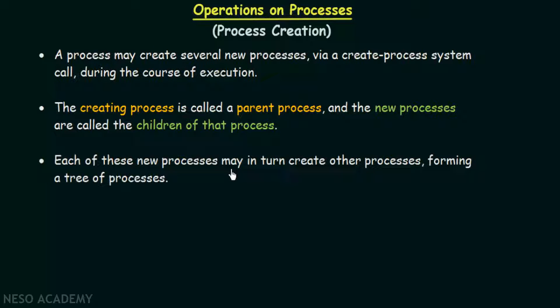Each of these new processes may in turn create other processes, forming a tree of processes. The parent creates children, and those children create their children, and so on. The formation of processes continues forming a tree structure, which we will see by looking at a diagram.